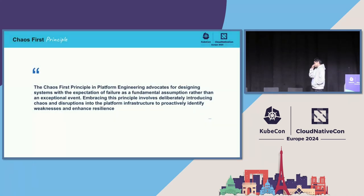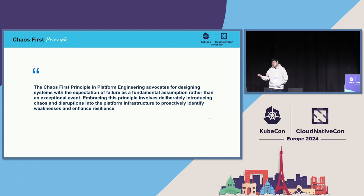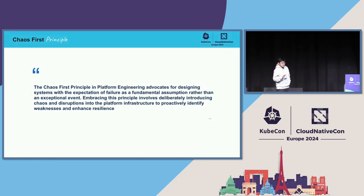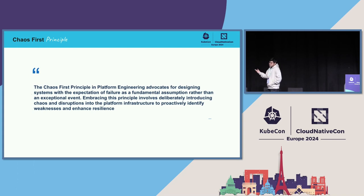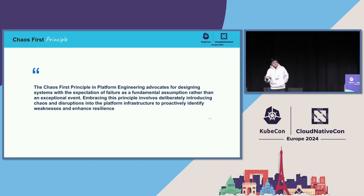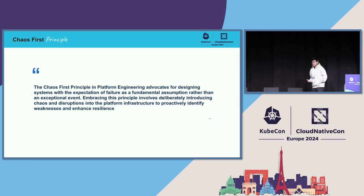What is the chaos-first principle? This talk is really about it. It's a principle in the context of platform engineering that advocates going chaos-first rather than being afraid of it — questioning whether you should even break production, whether it's too costly. This principle advocates designing your system with the expectation that failure is fundamental and bound to happen. We want to deliberately introduce chaos and disrupt the platform infrastructure to proactively identify weaknesses.